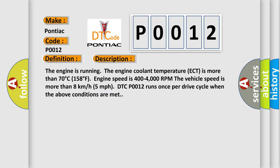The engine is running. The engine coolant temperature ECT is more than 70 degrees Celsius (158 degrees Fahrenheit). Engine speed is 400 to 4000 RPM. The vehicle speed is more than 8 kilometers per hour (5 miles per hour). DTC P0012 runs once per drive cycle when the above conditions are met.